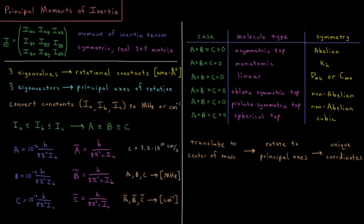This video will discuss principal moments of inertia and computing rotational constants from the x, y, z coordinates of molecules. In the previous video we discussed the moment of inertia tensor for molecules, where we have a symmetric real 3x3 matrix which describes the resistance to angular acceleration along each of the x, y, and z dimensions.